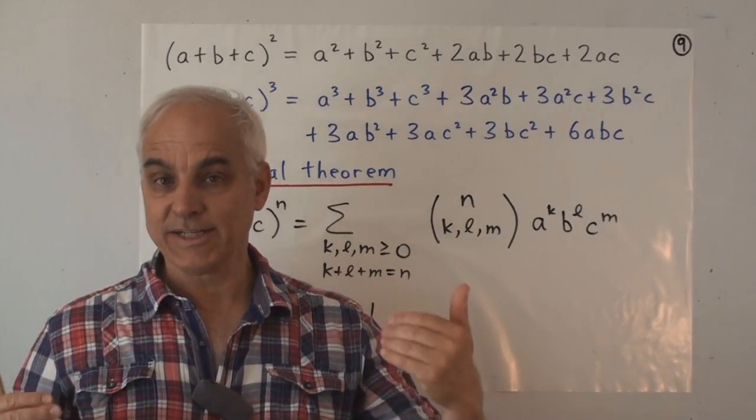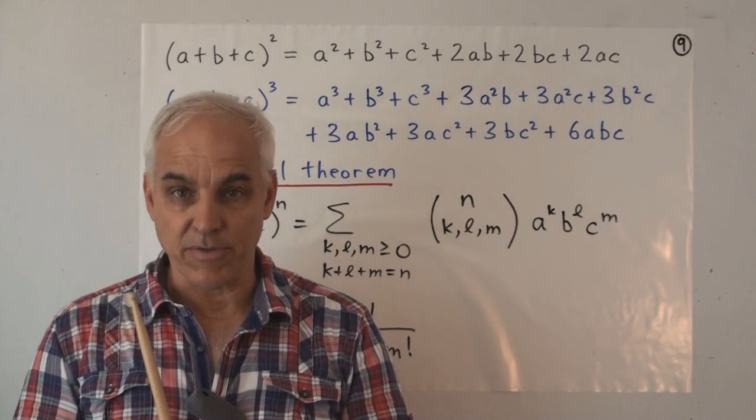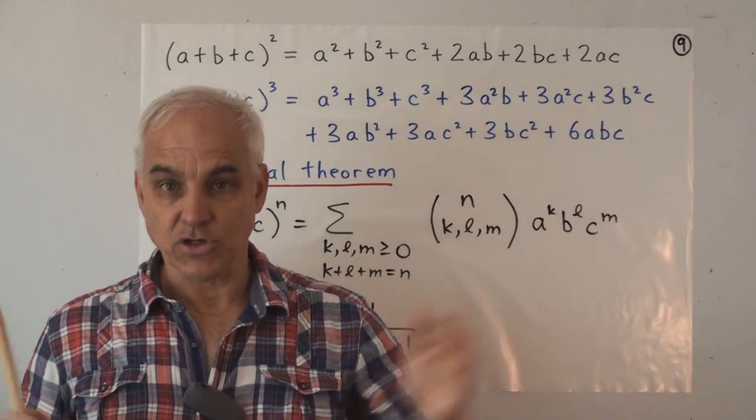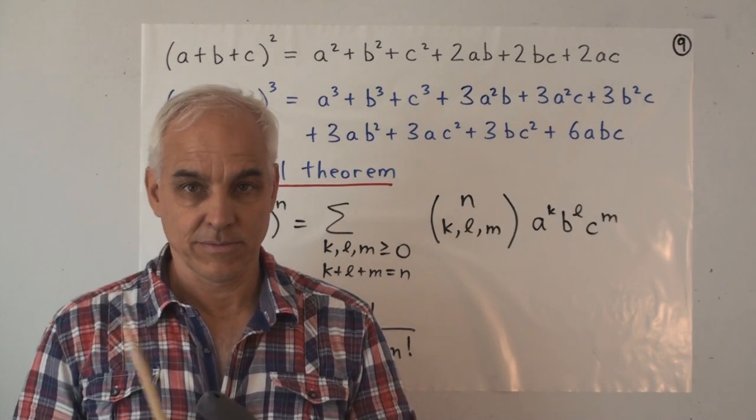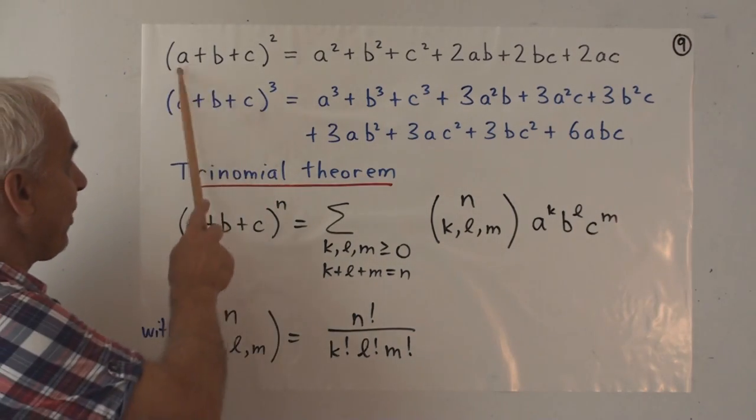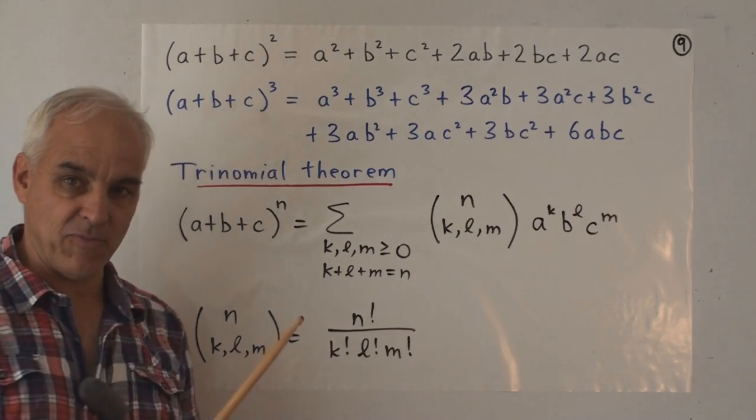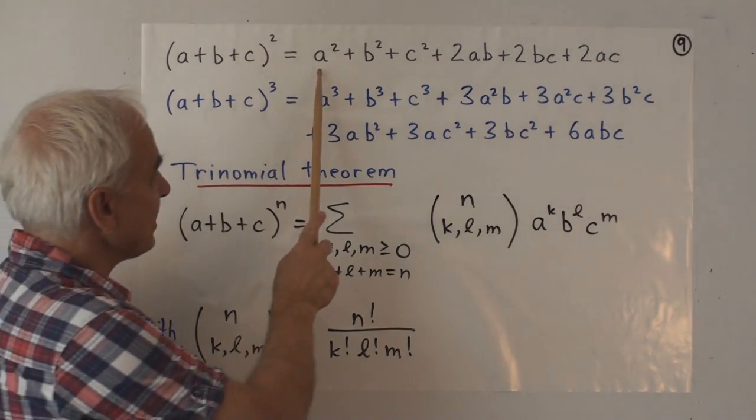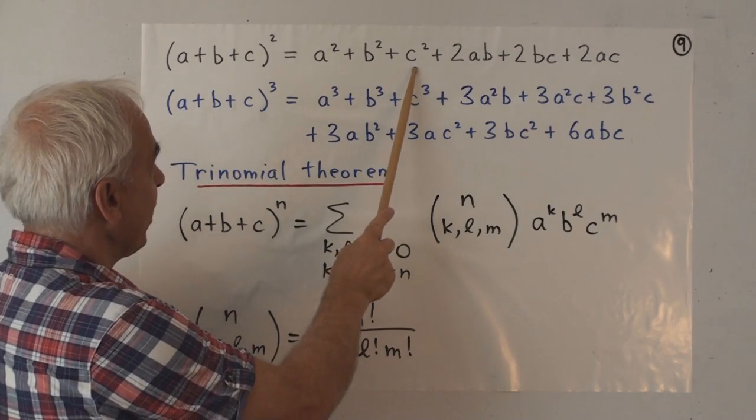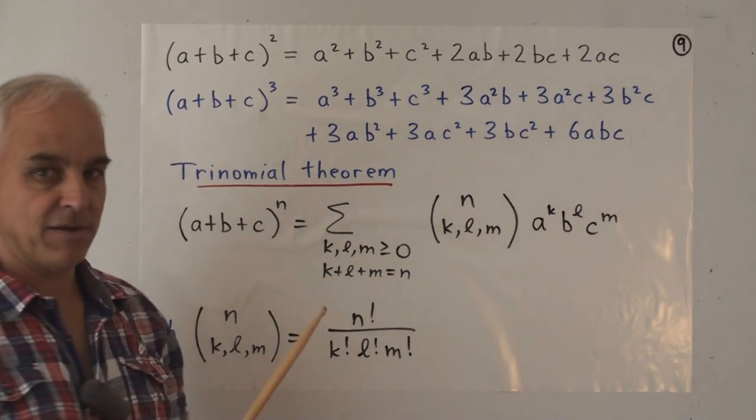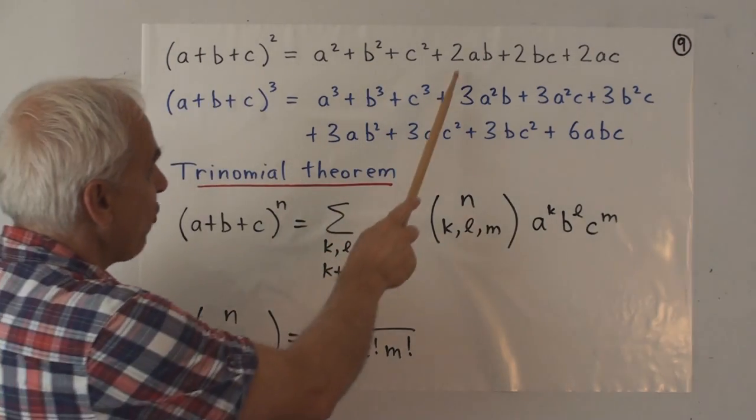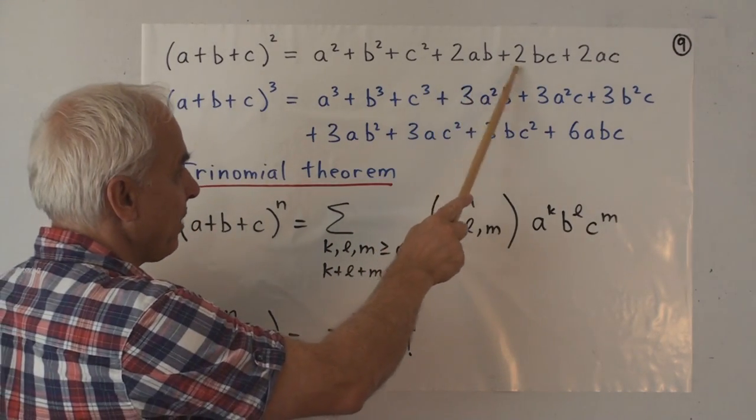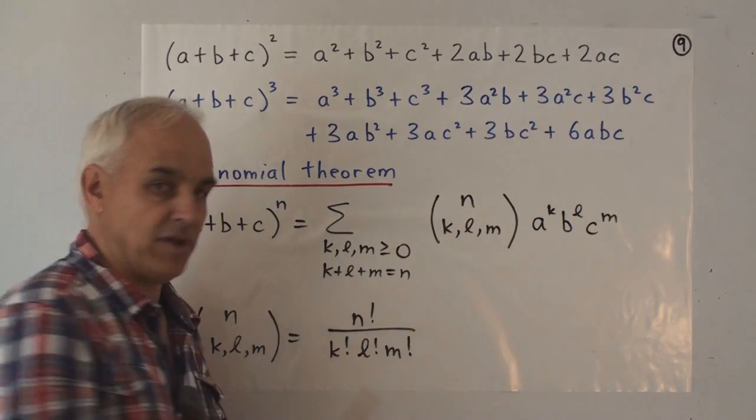There's an important extension of the binomial theorem. First to trinomials and then to larger expressions as well. So if we have a plus b plus c instead of a plus b and we square that then we can write it as a squared plus b squared plus c squared so squares of the three individual terms plus twice the various products of the various terms.